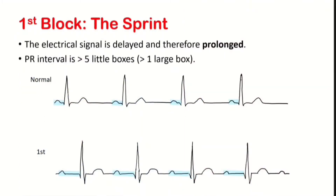In a first heart block, the electrical signal is delayed and therefore prolonged. The PR interval will be more than 5 little boxes, or larger than 1 large box.